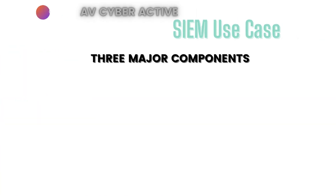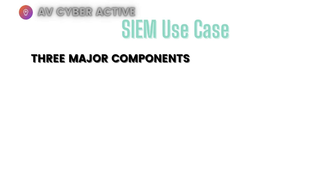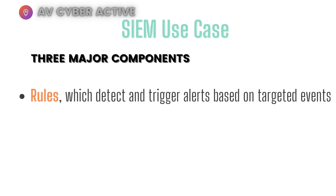Let's get started. A typical SIEM use case will have three major components. The first one, and this is the most important one, is the rule itself. This is basically the sum total of all the event types or events that you want to use for your base use case. This is the heart and soul of your use case itself.